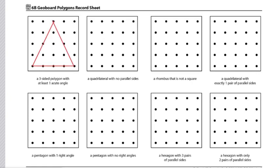Students will copy their favorite examples of polygons on the record sheet using a ruler to draw the straight sides. It might be helpful for students to check with other classmates to see if they've made their shapes correctly and that they've built the polygon that fits the description.